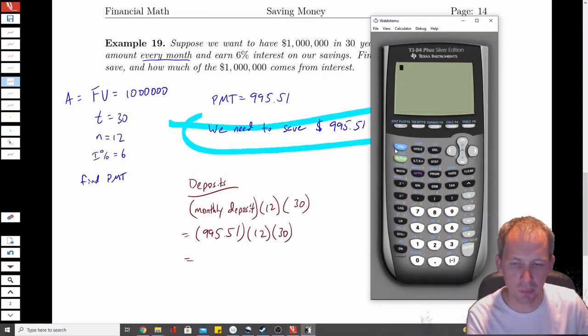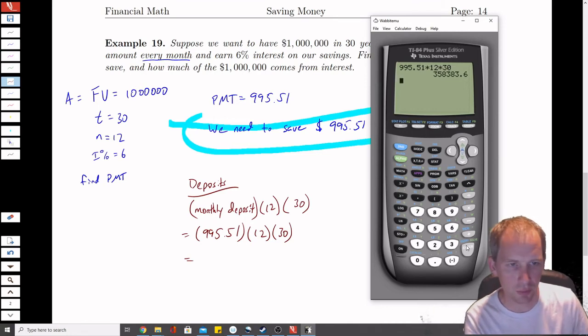So I've got my calculator. I'm not using the finance solver here. I'm just regular calculating. $995.51, times 12, times 30. And I end up with $358,383.60.